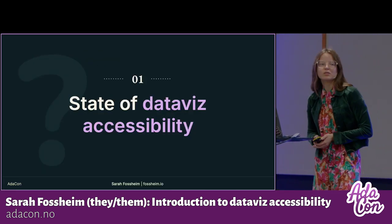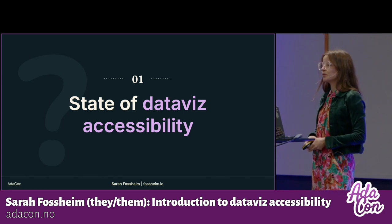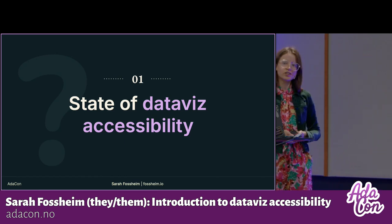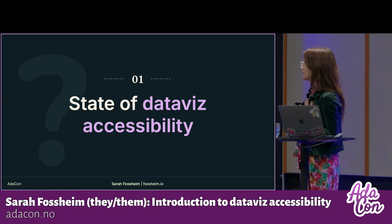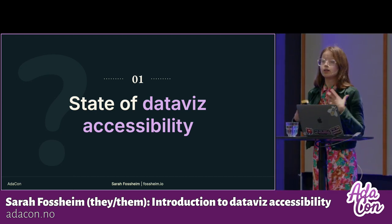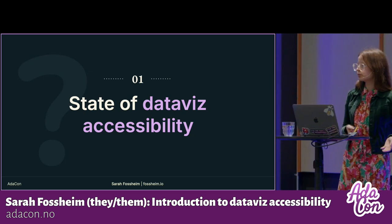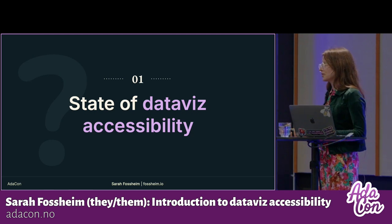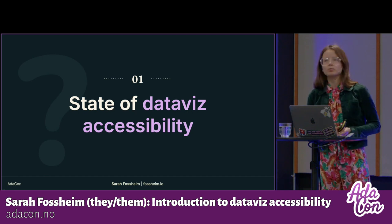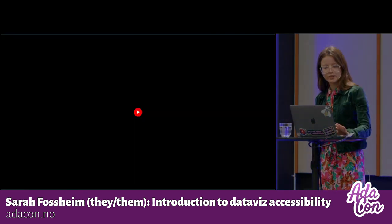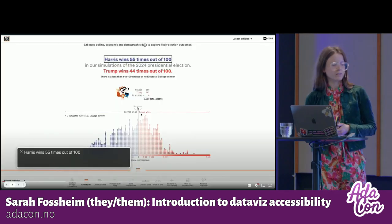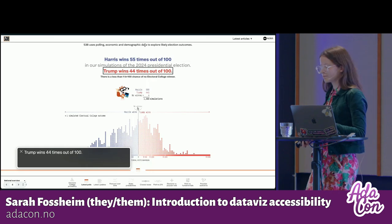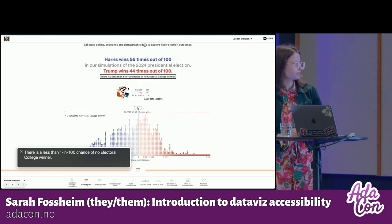To start a conversation about data viz accessibility, I'd like to show you the current state of it with an example of a chart I found related to the upcoming US presidential elections — a news outlet ran thousands of simulations to check whether Kamala Harris or Donald Trump would win, then visualized those in a scatter plot. The demo I'm going to show is me using this with a screen reader, and it's very similar to how a lot of graphs sound when I test them.